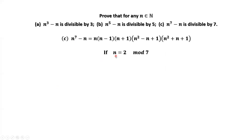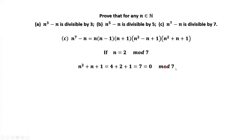If the remainder of N divided by 7 is 2: 2 squared is 4, plus 2, plus 1 — the sum of these three numbers is 7, which is divisible by 7. Therefore, when the remainder is 2, N to the power of 7 minus N is divisible by 7.